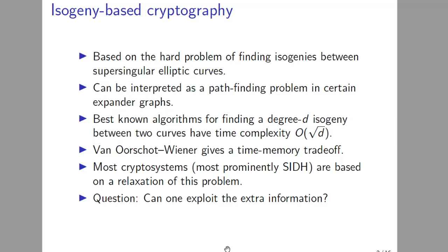Isogeny-based cryptography is based on the hard problem of finding isogenies between supersingular elliptic curves. When the degree of the secret isogeny is of the form L^k, where L is a small prime number, this can be interpreted as a path-finding problem in the supersingular isogeny graph. Best known algorithms for finding a degree-d isogeny are meet-in-the-middle algorithms, reduced to random walks from both endpoints hoping for a collision.